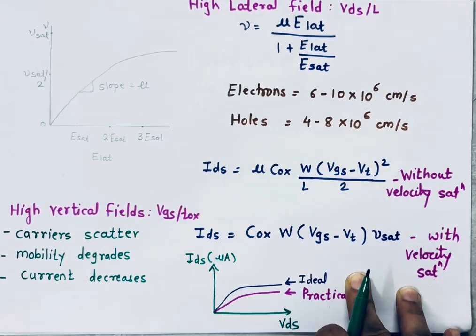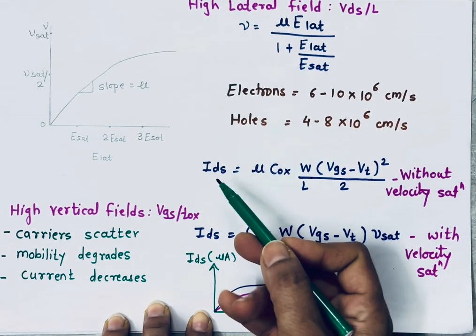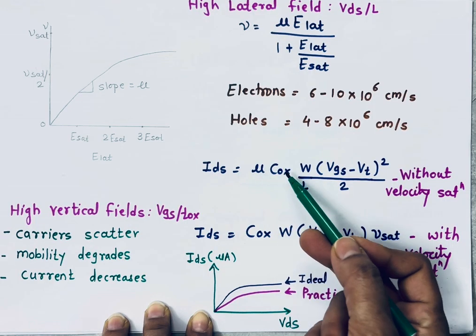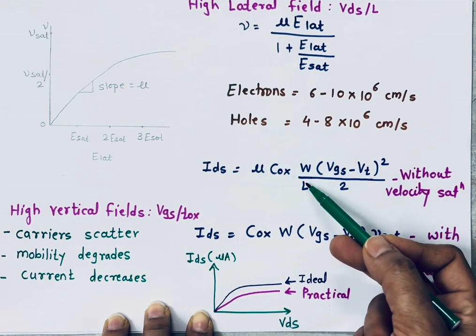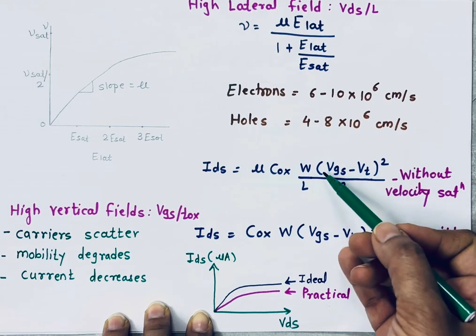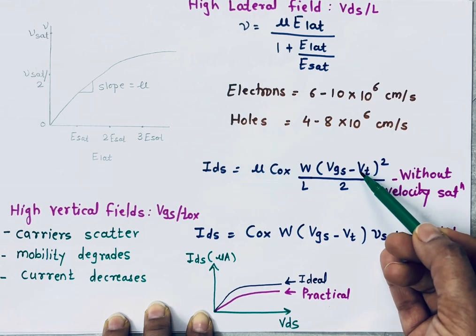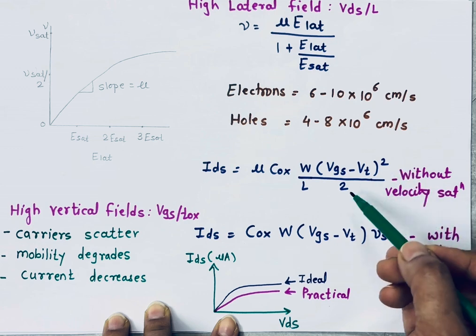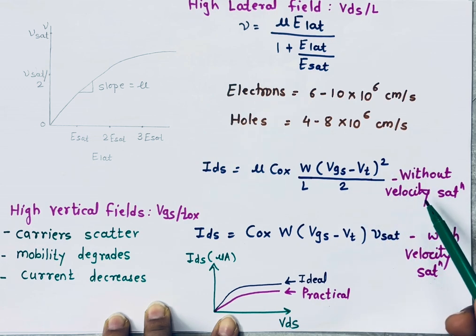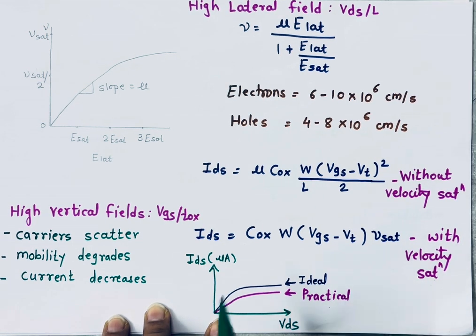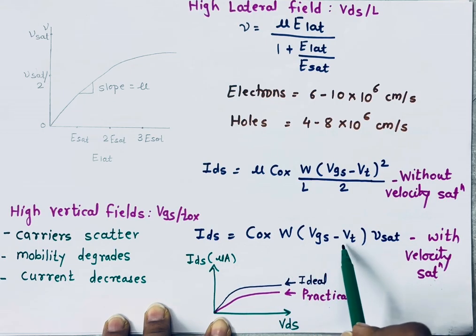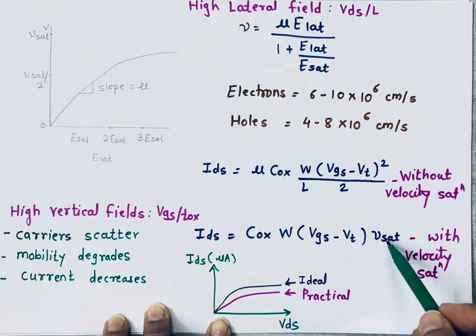The standard MOSFET current equation without velocity saturation is: I_DS = μ × C_OX × (W/L) × (VGS − VT)² / 2. After accounting for velocity saturation, the current equation becomes: I_DS = C_OX × W × (VGS − VT) × V_saturation. This is the expression with velocity saturation.